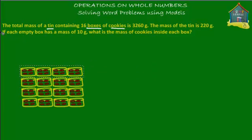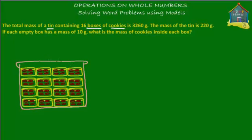Now we have 16 boxes of cookies. Let's put a tin around it so we know that this is one tin. Let's put a lid and a handle on the tin. The pink one is the tin of cookies and the yellow is the cookie box.